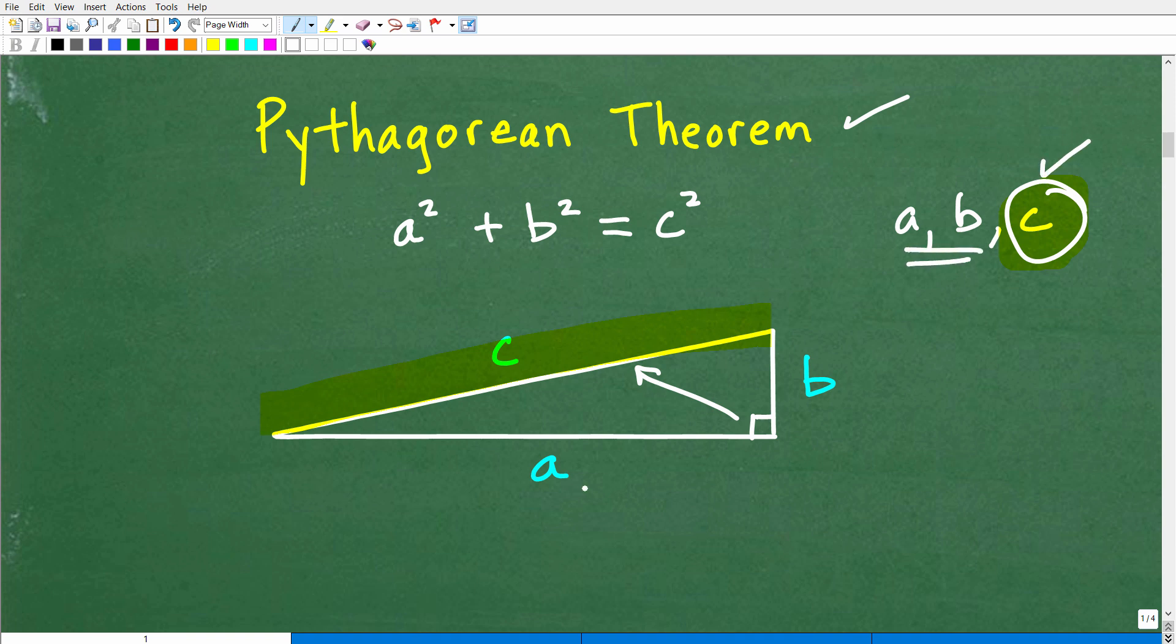Your A and B are the other sides of the right triangle. So the shortest side and this middle side are the A and B. It doesn't make a difference if you put this as B and this as A. But it does make a huge difference if you don't have the longest side as C.